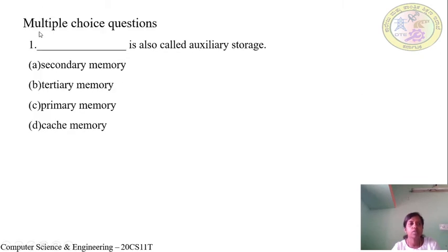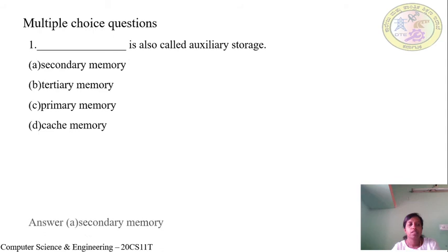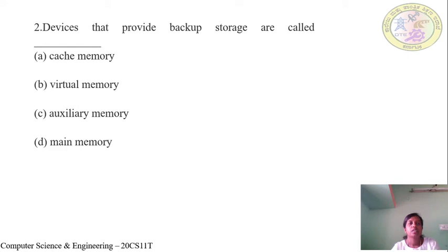Now the multiple choice questions. Question 1: Blank is also called auxiliary storage. Answer: A — Secondary storage. Question 2: Devices that provide backup storage are called — Answer: C — Auxiliary memory.